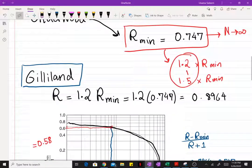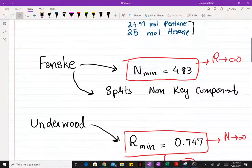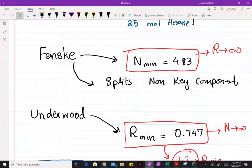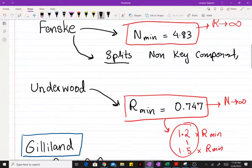So yeah, that's pretty much it. You use the Fenske to find the minimum number of stages, you use the Fenske to find the splits of your non-key components.